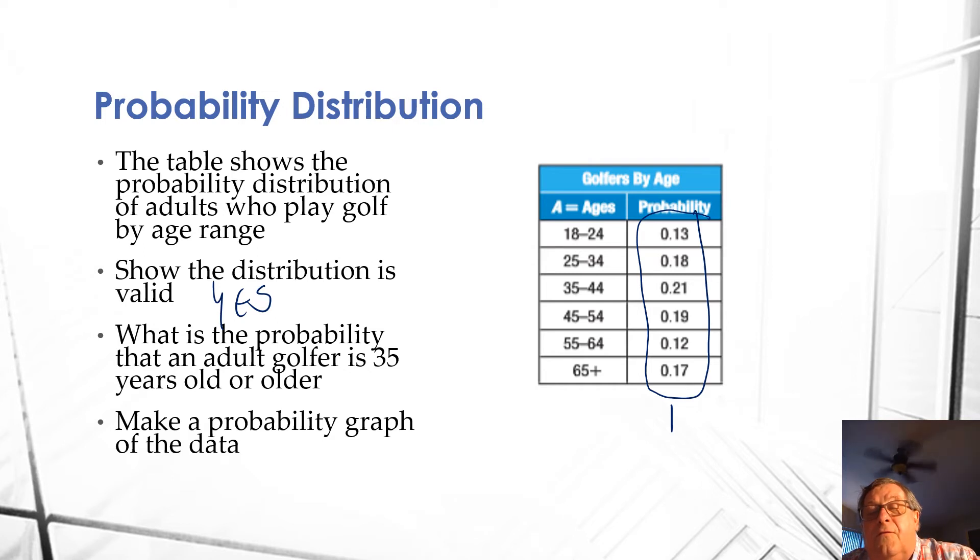55 to 64, 65 plus. So if you're going to be 35 or older, it's going to be all those values right there, 0.21 down to 65 plus of 0.17.